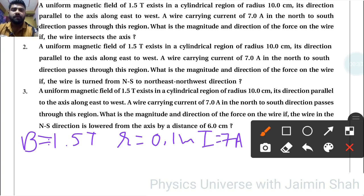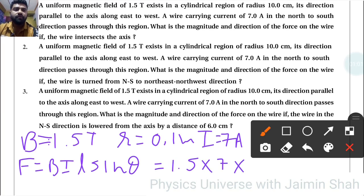So here the formula to find force is F equals BIL sine theta. That is the formula now for magnitude and direction of the force on the wire. So B we have 1.5, I is 7, and L, but this L is the total length.